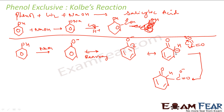We have now broken the aromaticity, and we want it back. To restore it, we can kick the hydrogen out. The H⁺ leaves and we get a negative charge at that position. Then we break the adjacent bond — getting a positive charge and a negative charge — to allow rearrangement.